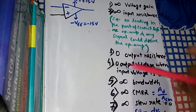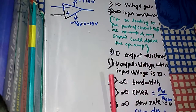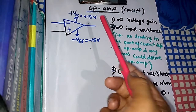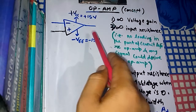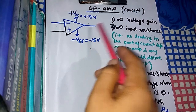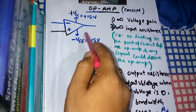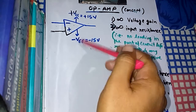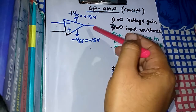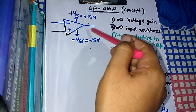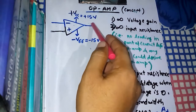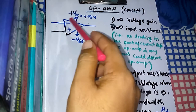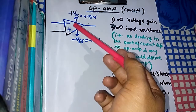Now we will discuss the seven characteristics of the ideal operational amplifier. The first is infinite voltage gain. The open loop operational amplifier is the ideal operational amplifier. For this, the voltage gain is infinite. However, if you attach a negative feedback circuit to the operational amplifier — which we will see in the next video — then the voltage gain is not infinite.